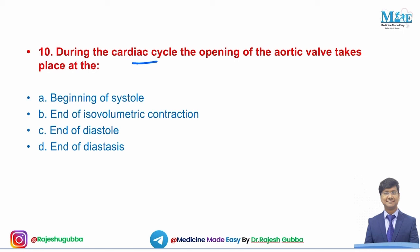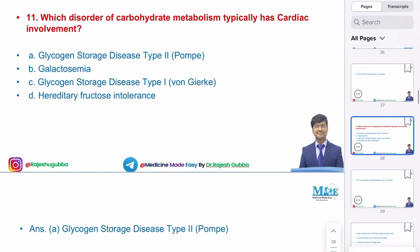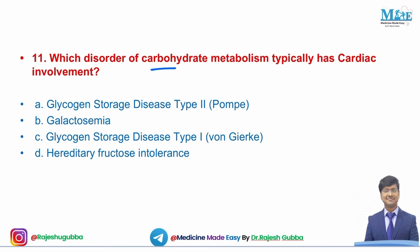Next question: during the cardiac cycle, opening of the aortic valve takes place at — beginning of systole, end of isovolumetric contraction, end of diastole, or end of diastasis. The aortic valve opens at the end of the isovolumetric contraction phase. During isovolumetric contraction, the AV valves (mitral and tricuspid) close, and at the end of this phase, both the aortic and pulmonary valves open.